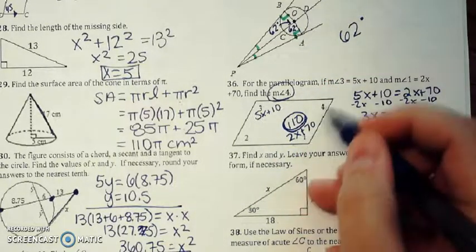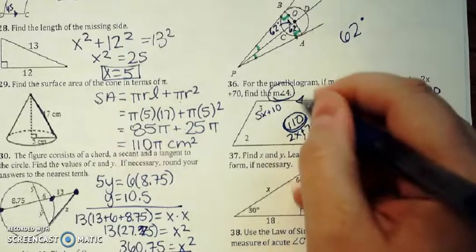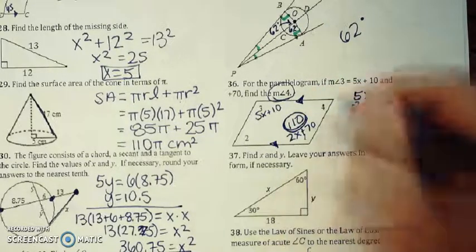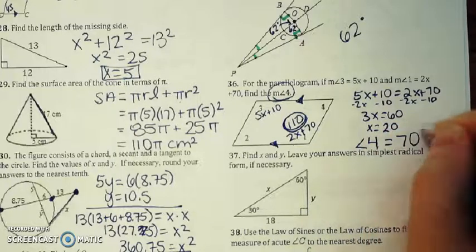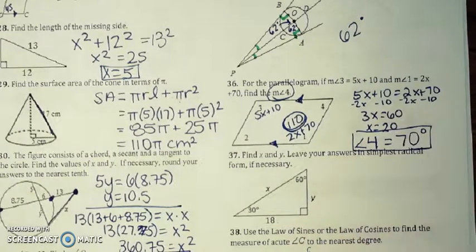Now that angle and angle 4, since this is a parallelogram, would be same side interior angles. So they have to add up to 180. Angle 4 is going to end up being 70 degrees.